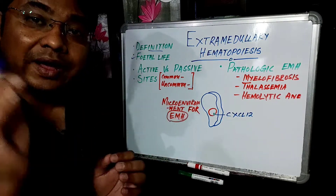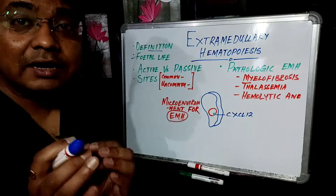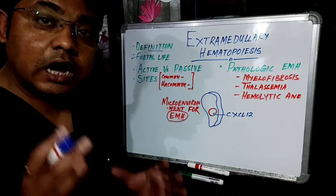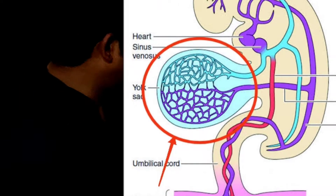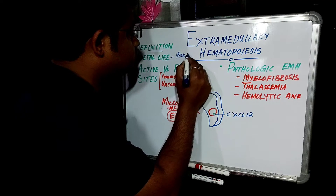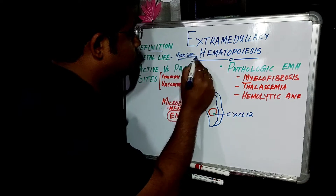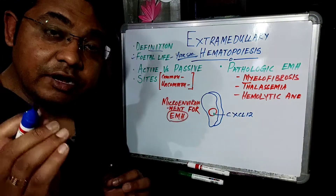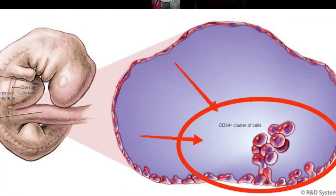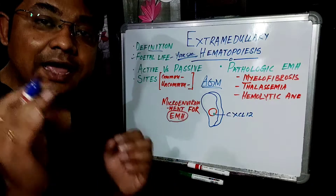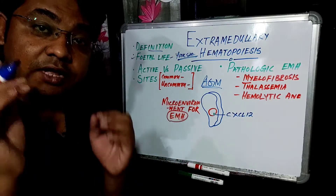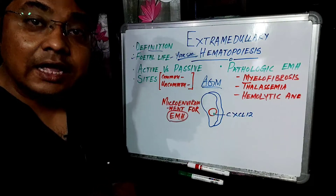Now let's talk about fetal life — where does hematopoiesis take place? The first occurrence of hematopoiesis observed after conception is in the yolk sac. After that, definitive hematopoiesis takes place in the AGM region, which means the aorta-gonad-mesonephros region of the embryo.